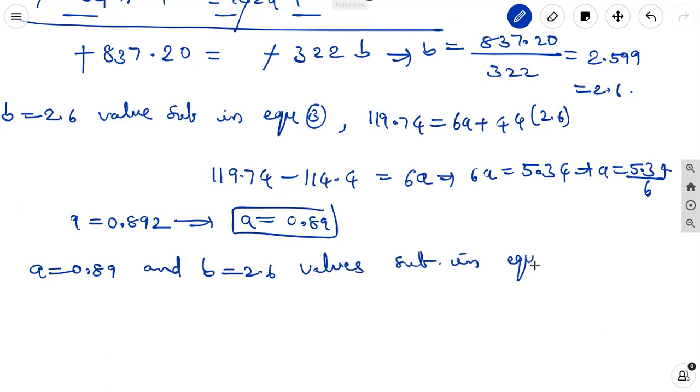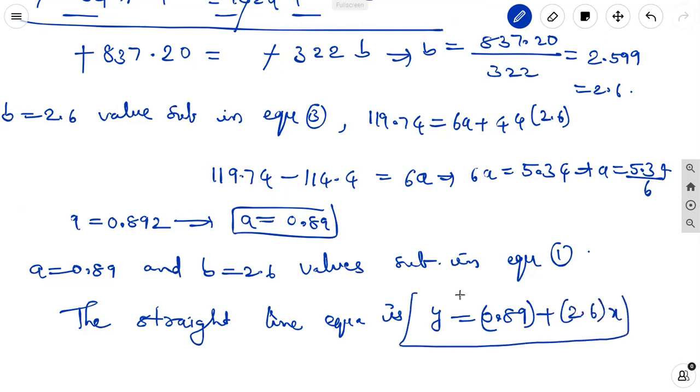A equal to 0.89 and B equal to 2.6 values substitute in equation 1. Then that is the required straight line equation to fit a curve by the method of least squares. The straight line equation is y equal to 0.89 plus 2.6x. We can take the normal equations and from the data we can find out the required value. Substituting, we are getting the straight line equation.